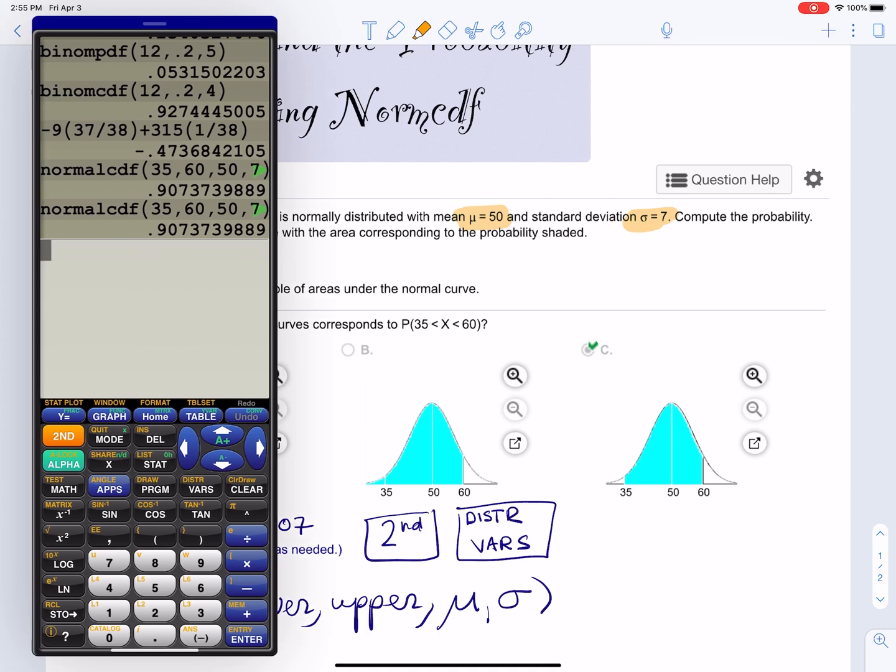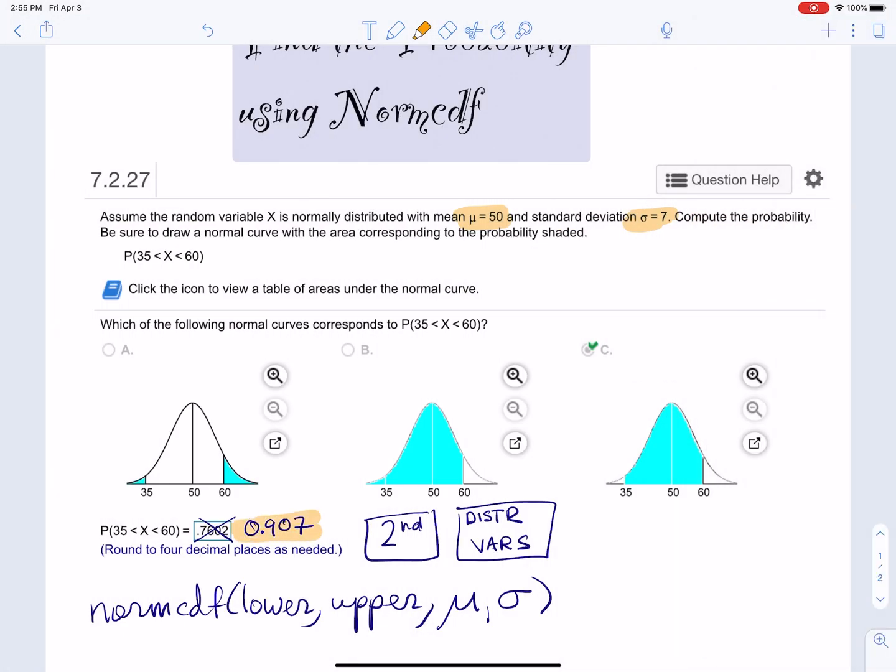And you get your 0.907. All right. So that's how I got 0.907. That's it.